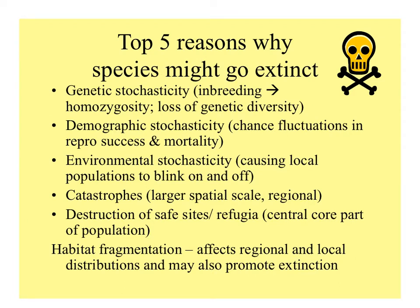Why might species go extinct? It might be that too much inbreeding and loss of genetic diversity leads to extinction through stochastic disaster. Demographic stochasticity involves chance fluctuations in birth and death. Environmental stochasticity involves events that eliminate populations. Catastrophes on a larger scale — like hurricanes — can also cause extinction. And it might be that conditions change so that safe sites or refuges are eliminated, so that the central core population can no longer persist.